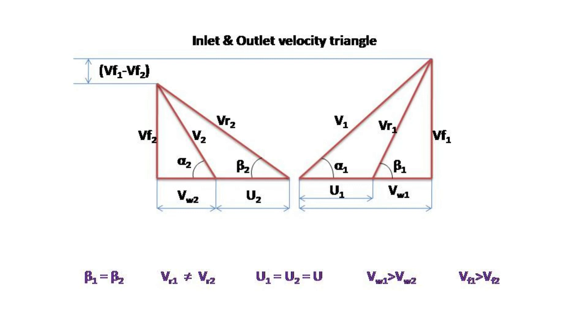The difference between the vf1 and vf2 multiplied by the mass of the steam will give the axial force or thrust in axial direction.